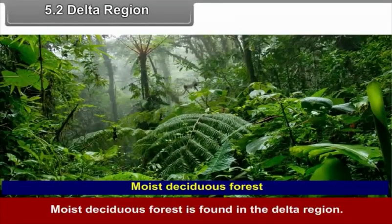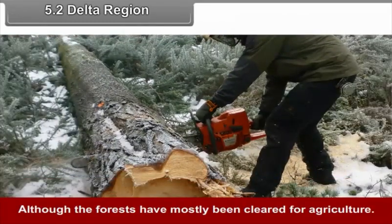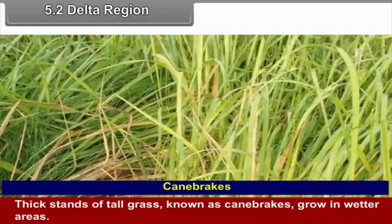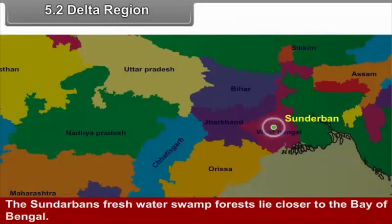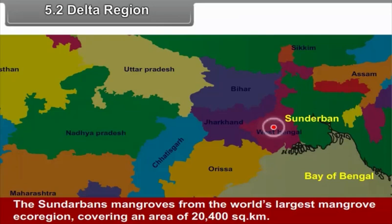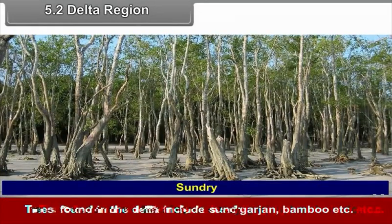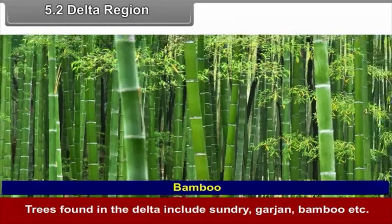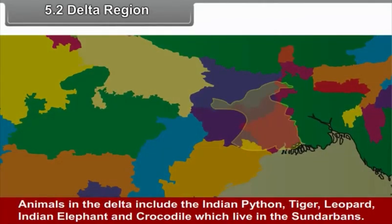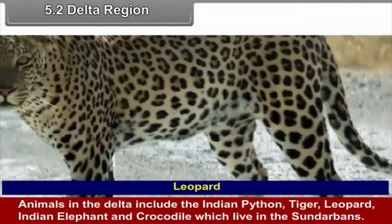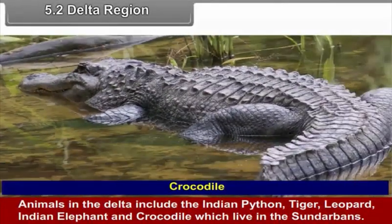Moist deciduous forests are found in the delta region. Although the forests have mostly been cleared for agriculture, thick stands of tall grass known as cane brakes grow in wetter areas. The Sundarbans freshwater swamp forests lie close to the Bay of Bengal. The Sundarbans mangroves form the world's largest mangrove ecoregion, covering an area of 20,400 km². Trees found in the delta include Sundari, Garjan, bamboo, etc. Animals in the delta include the Indian Python, Tiger, Leopard, Indian Elephant and Crocodiles, which live in the Sundarbans.